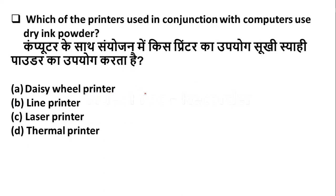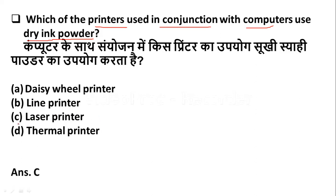Which of the printers used in conjunction with computers uses dry ink powder? Option A: DC wheel printer. Option B: line printer. Option C: laser printer. Option D: thermal printer. Option C — laser printer — is the right answer.